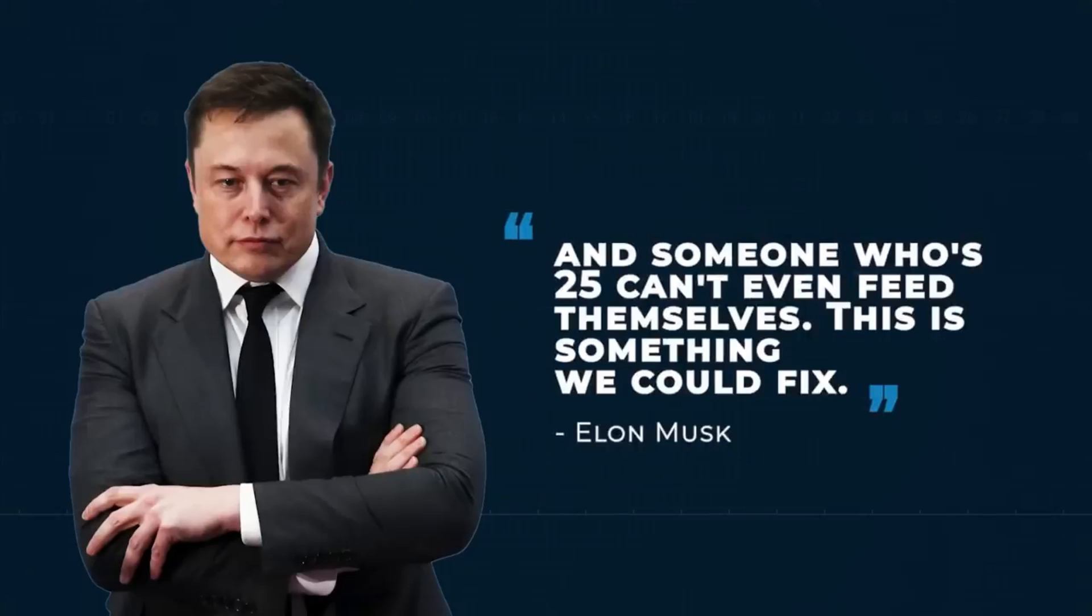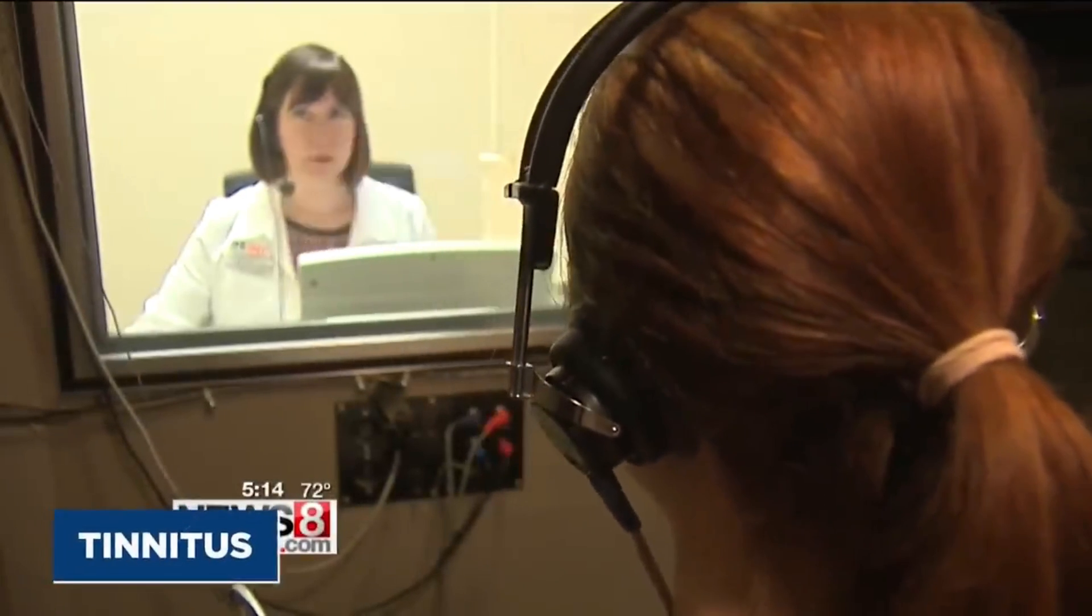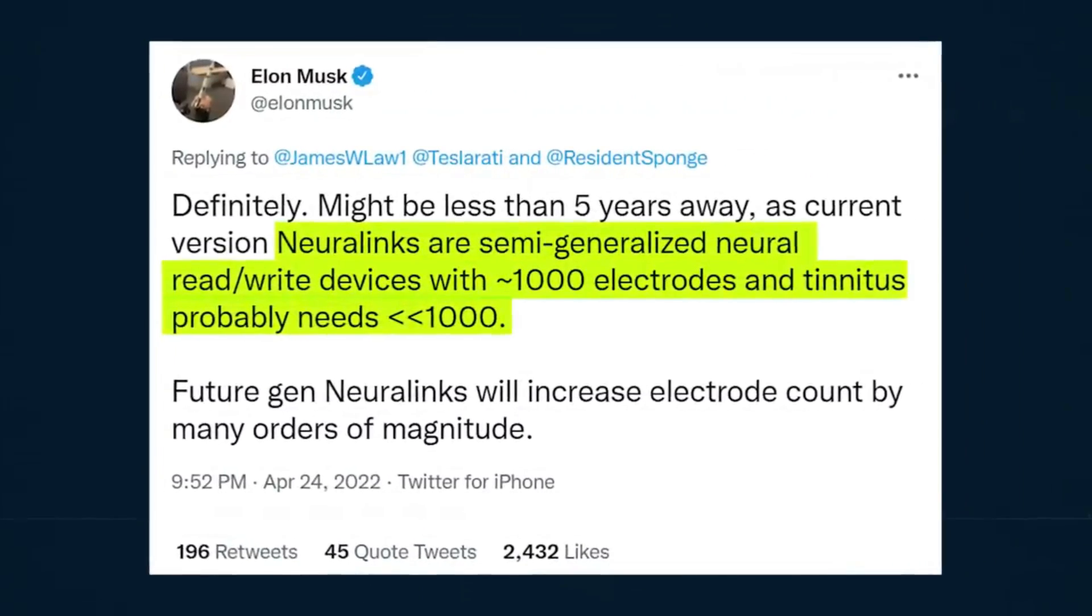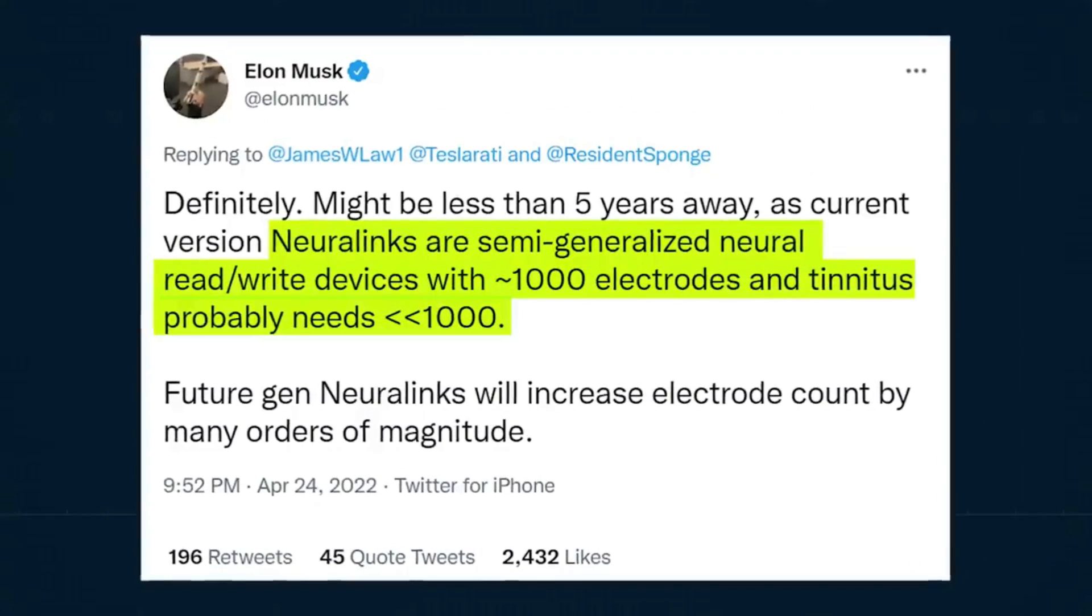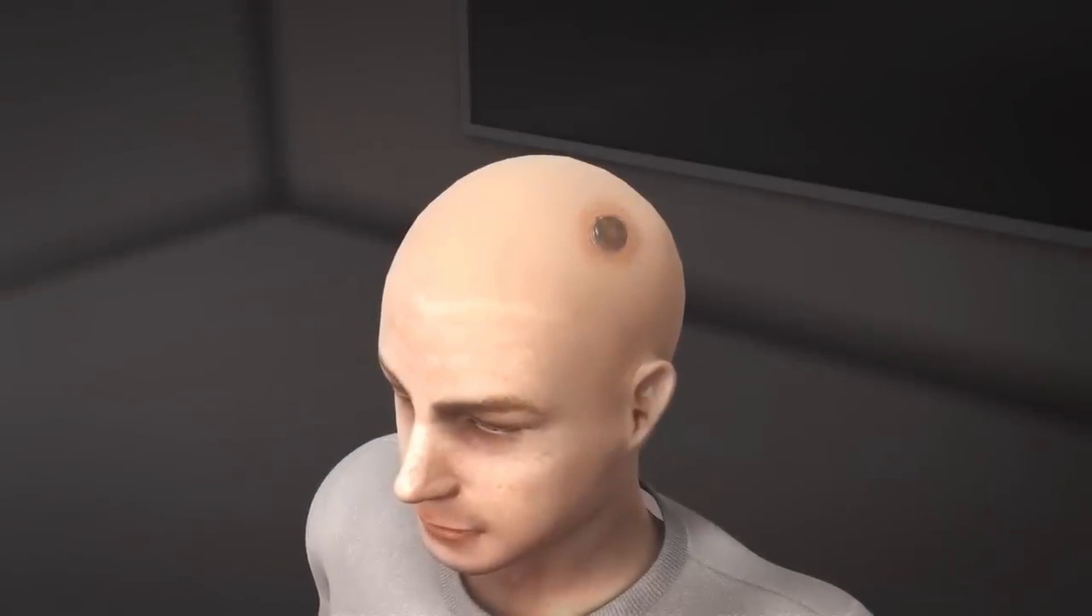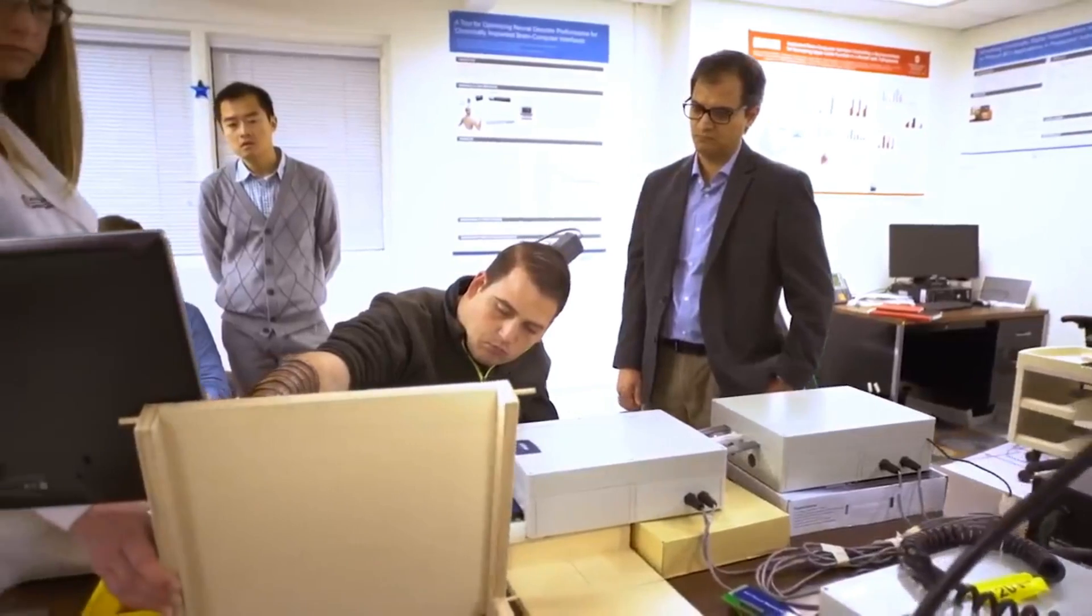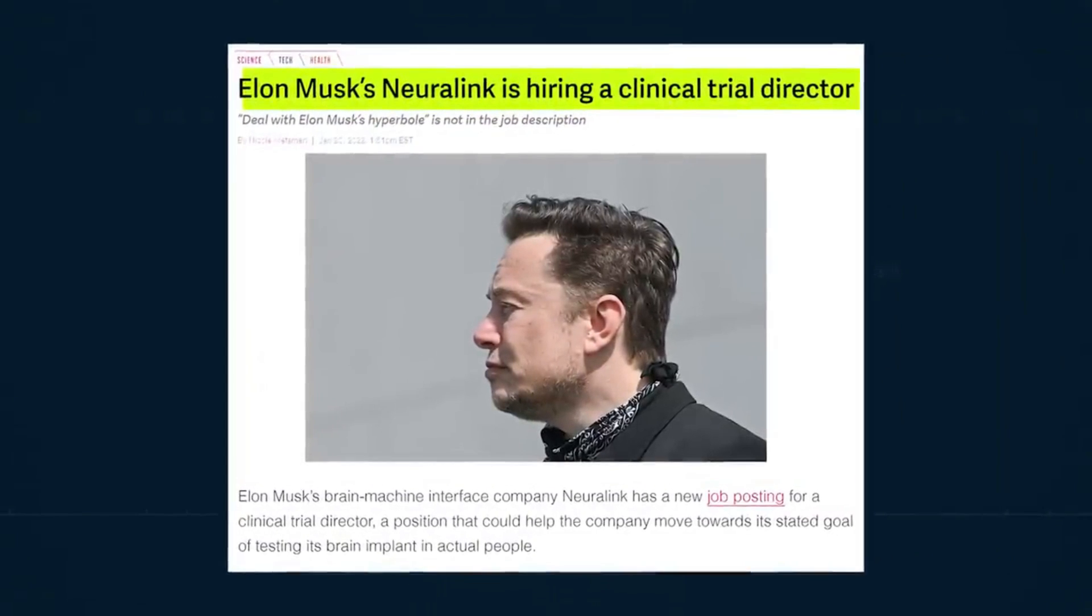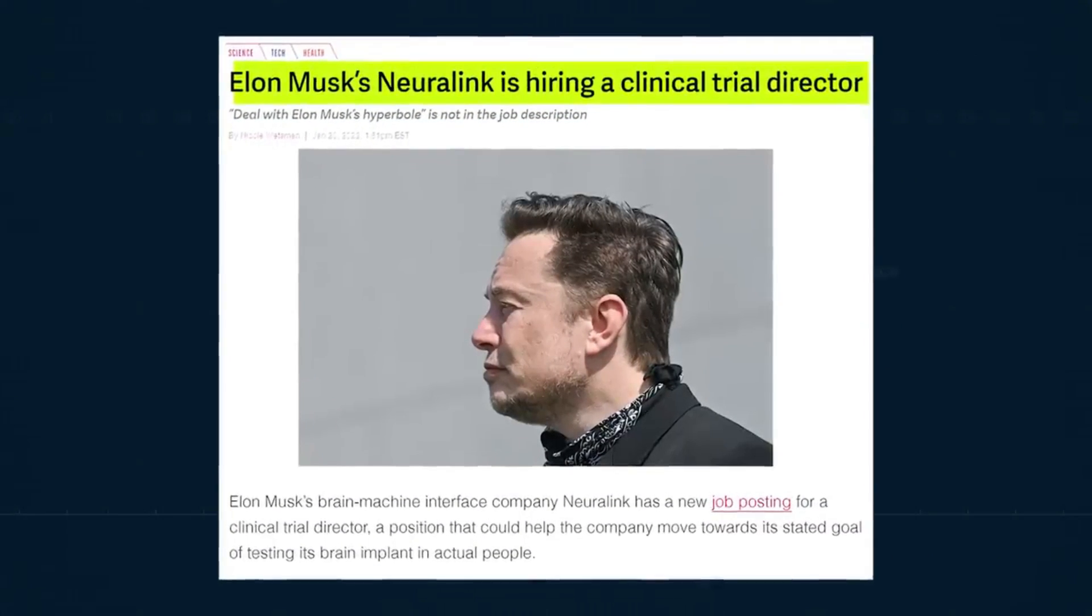These trials demonstrated that Neuralink's technology can accurately record and interpret brain activity, paving the way for future human applications. However, many obstacles must still be overcome before this technology can be used safely and effectively in humans. According to recent reports, the US Food and Drug Administration has given Neuralink permission to begin testing its technology on human subjects. This is a significant achievement for the company.